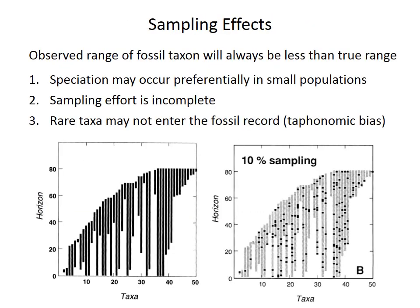However, the assumption of synchronicity may not be true for a variety of reasons. First, the observed fossil range of a species is always less than the true range. If speciation occurs in small populations, the species is likely to be geographically restricted when it first originates, and later spreads to other regions. That time gap may not be significant geologically, but it could also be significant — it's difficult to tell. Sampling is also incomplete, as illustrated in the graph below. The left panel shows the true ranges for some hypothetical species, and the right panel shows a modeled fossil record with many gaps. This is with 10% sampling efficiency, which is probably an overestimate for certain rare groups.